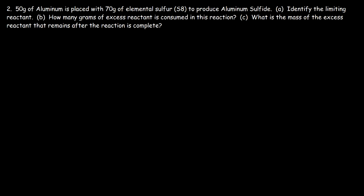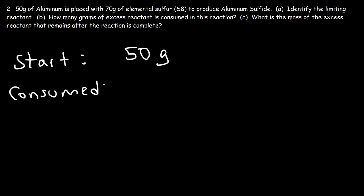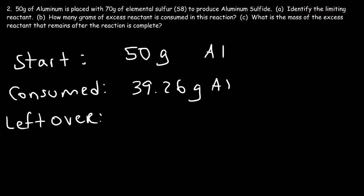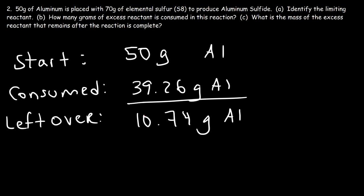Now for the last part: what is the mass of the excess reactant that remains after the reaction is complete? The excess reactant is aluminum. We started with 50 grams, and 39.26 grams was consumed during the reaction. So the amount left over is 50 − 39.26 = 10.74 grams of aluminum. Hopefully these two problems gave you a clear process for finding the amount of excess reactant that remains.